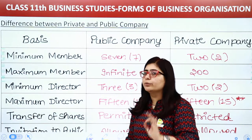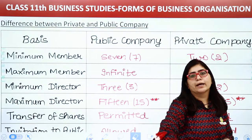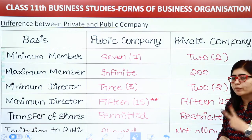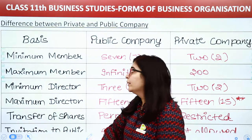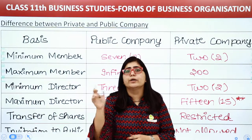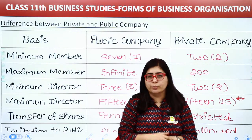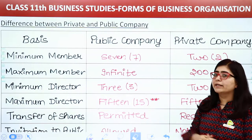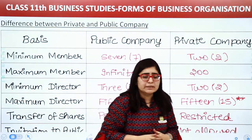Minimum 7 people are required to start a public company. On the other side, if you want to start a private company, the minimum number of members — by member I mean shareholders — is just 2. And if we talk about maximum members, there is no limit on the public company.